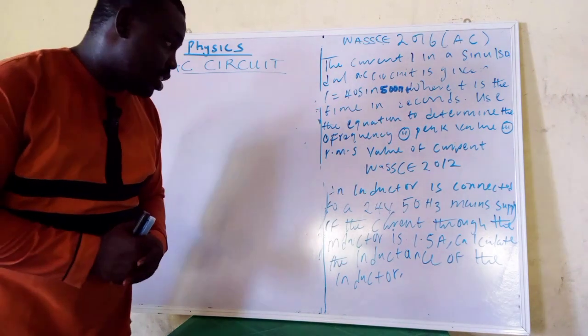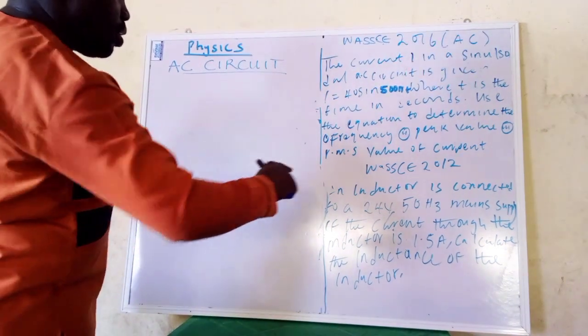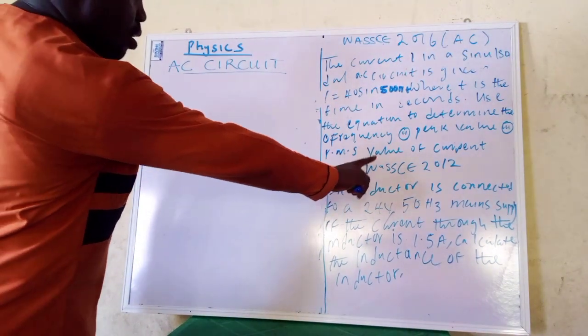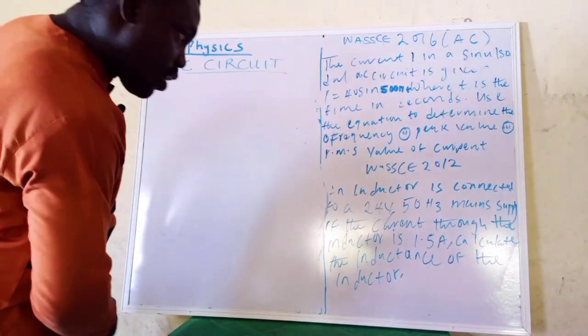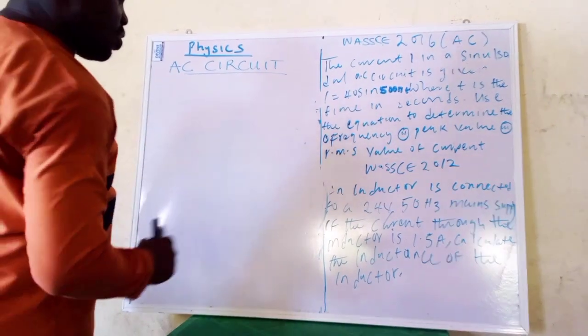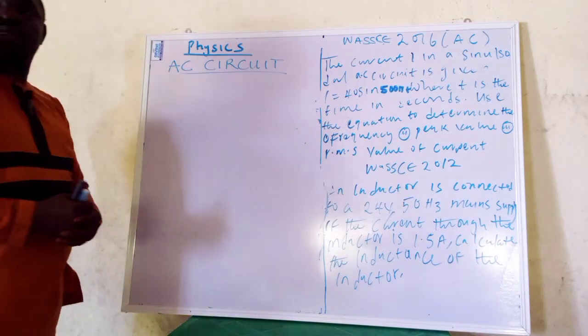An inductor is connected to a 24V 50Hz AC supply. The current to the inductor is 1.5A. We are told to calculate the inductance of the inductor.